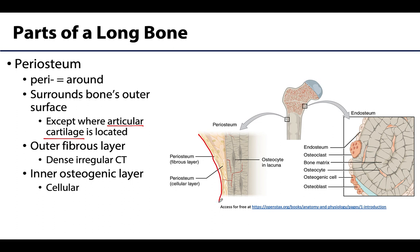There are two layers of the periosteum. The outer fibrous layer is most important in terms of protection and is composed of dense irregular connective tissue. The inner layer is an osteogenic layer because it is cellular in composition, and it plays a major role in appositional growth — growth in width — as well as a vital role in fracture repair. The periosteum is attached to the underlying bone through perforating or Sharpey's fibers.